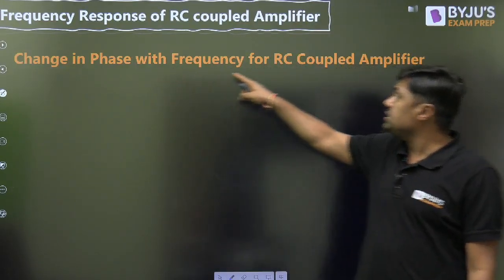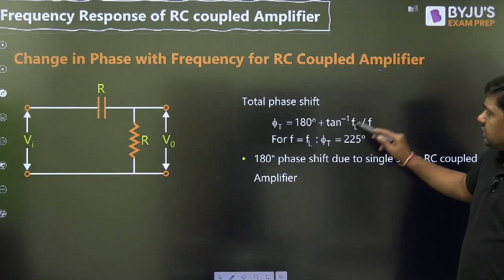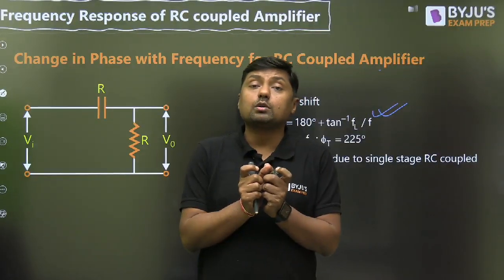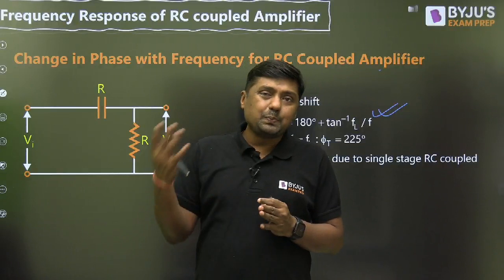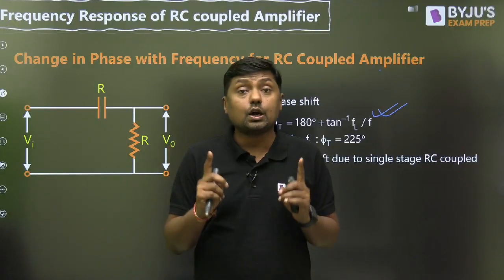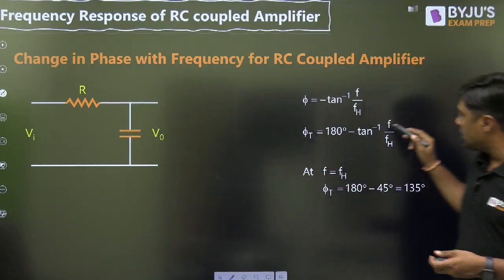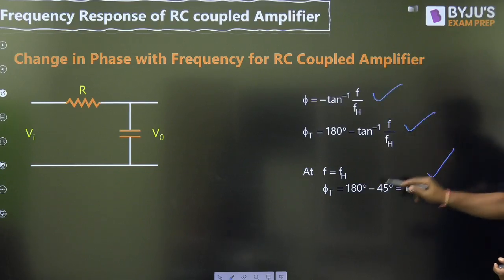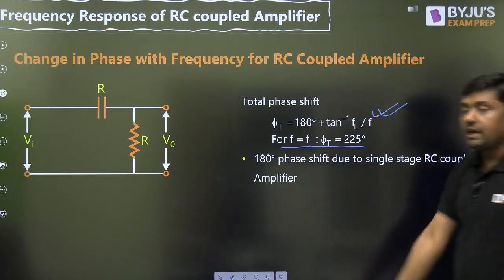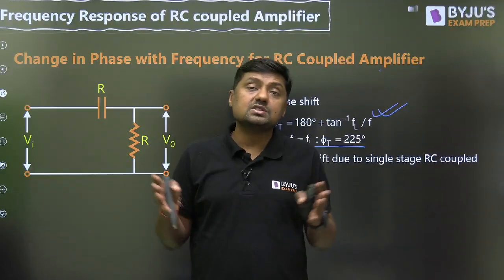Watch this diagram carefully — change in phase with frequency for RC coupled amplifier. For the high pass filter, at exactly the cutoff frequency the change in phase is 45 degrees. So for high pass filter it becomes 180 plus 45 equals 225 degrees. For low pass filter at cutoff frequency it becomes 180 minus 45 equals 135 degrees. At the lower frequency side there is a change in gain as well as change in phase. At the higher frequency side there is also a change in gain and change in phase.